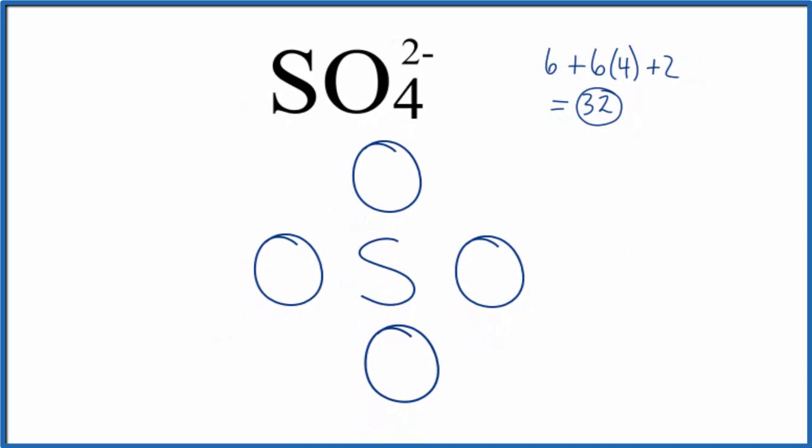Next we'll put a pair of electrons between atoms, and that's going to form our chemical bond between the sulfur and the oxygen atoms. At this point we've used 8 valence electrons. We have 32.